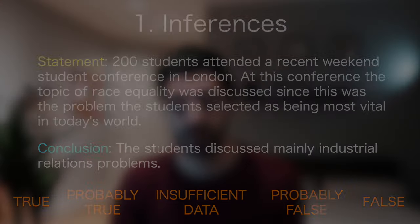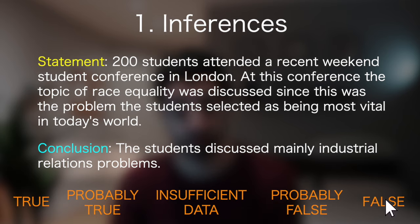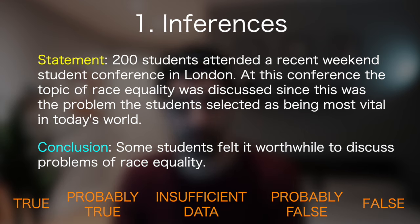Let's look at the example again. We know that at this conference, the topic of race equality was discussed. The conclusion says that the students discussed mainly industrial relations problems, so you can see clearly that it goes against the facts given in the statement — so this one is false. Another conclusion could be: some students felt it worthwhile to discuss problems of race equality. We reaffirmed that the students selected race equality as one of the most vital problems in today's world, so it does follow beyond a reasonable doubt. For this second conclusion, you can answer true.